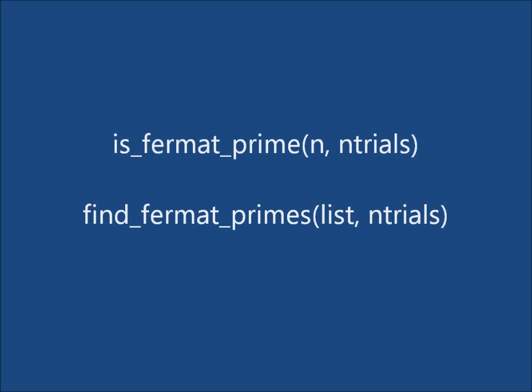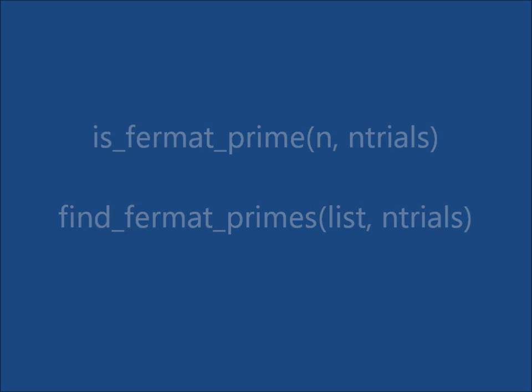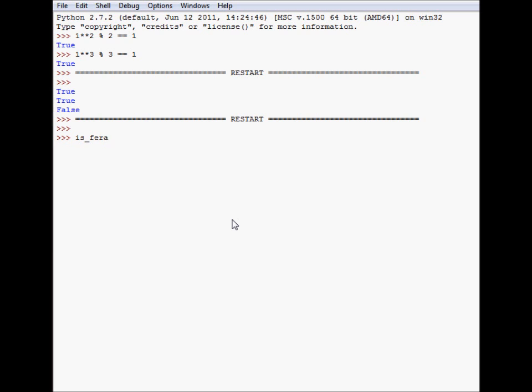So these are the two functions that you will have to implement. The first is Fermat's primality test that takes a number and the number of trials and executes Fermat's primality test the specified number of trials. So, tests if 2 is a prime 10 times. So, is Fermat prime 8 10 times, so this is false.